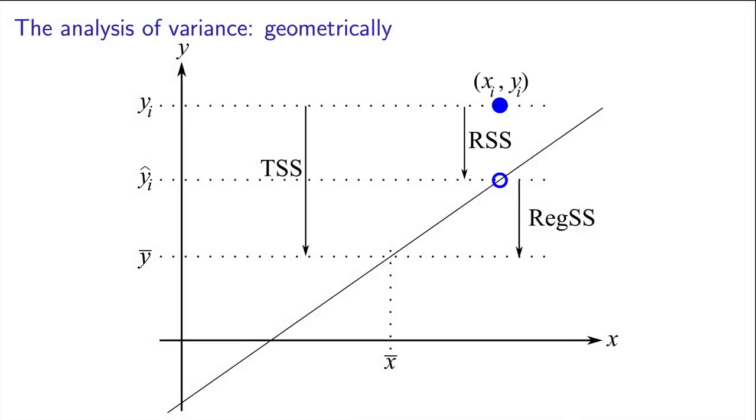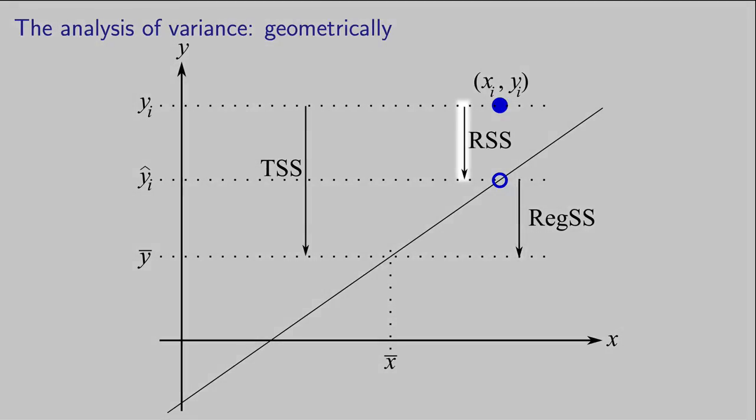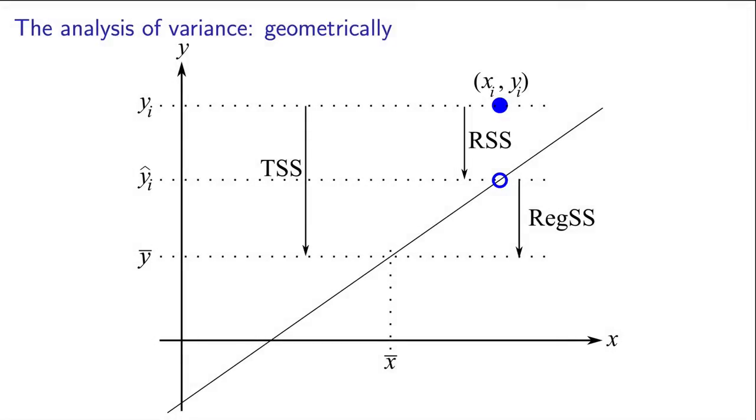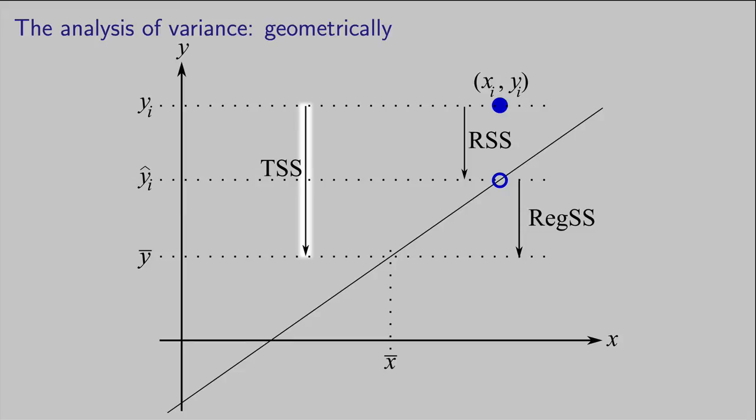Geometrically, we are seeing the breakdown happening here. The deviation from the prediction on the line to our base case, and then the deviation from the actual data point to the prediction. These two portions, regss and RSS, add up and equal the TSS, the total sum of squares.